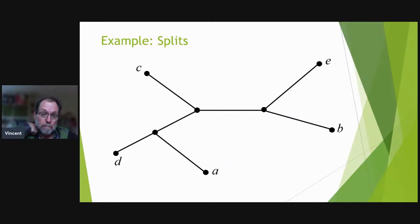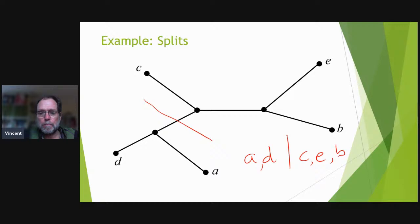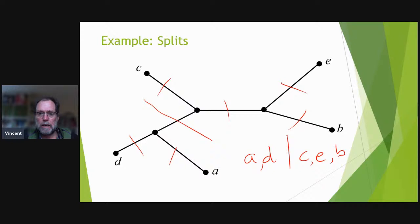We can also get splits from a tree. A split is obtained by cutting an edge, which partitions the leaf set into two parts — for example, {A, D} versus {C, E, B}. Each edge in the tree gives a split, so a tree with seven edges gives seven splits. This is another way to encode or represent a phylogenetic tree.